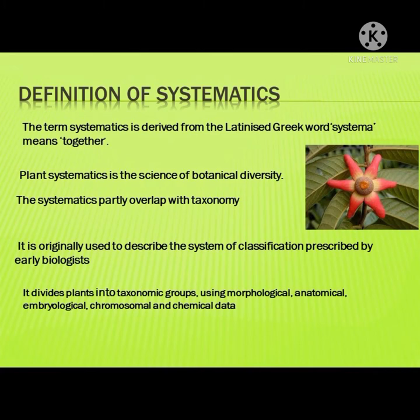So, let's start with the definition of systematics. The term systematics is derived from the Latinized Greek word systema, meaning 'to collect from different sources.' Plant systematics is the science of botanical diversity, meaning it is a branch concerned with the study of plant variations.